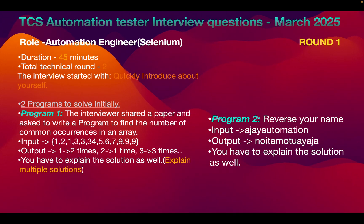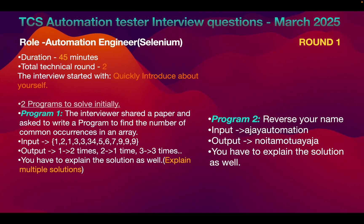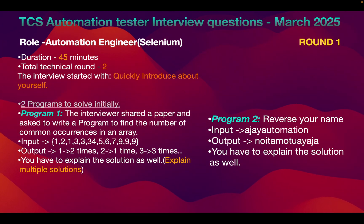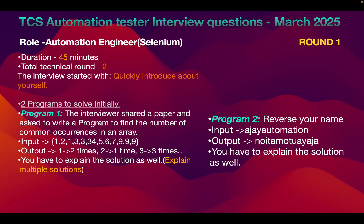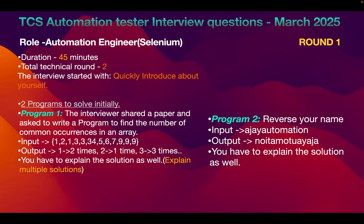The interviewer shared a paper and asked the candidate to write programs. The first program was: from an array, count the number of occurrences. In this array there are duplicate values — 1 is repeated 2 times, 2 is present 1 time, and 3 is present 2 times. You have to output how many times each number appears, explaining multiple approaches like looping or HashMap.